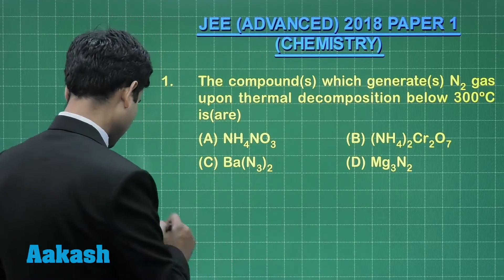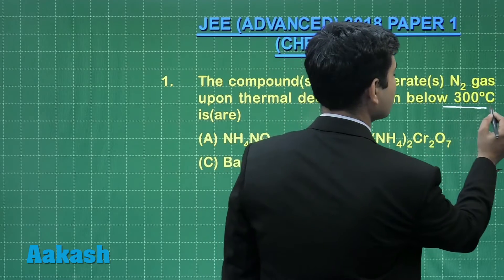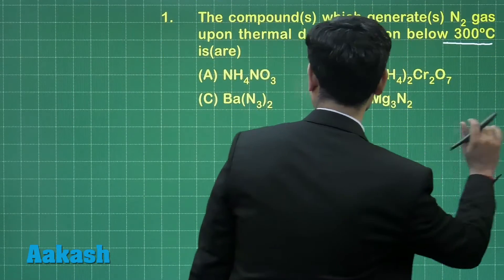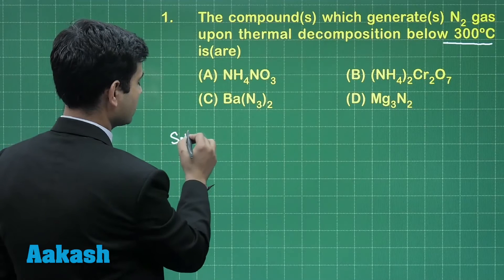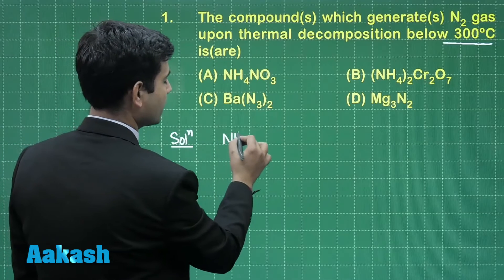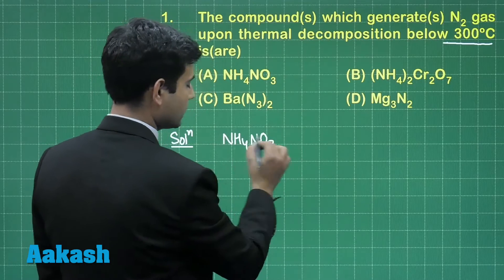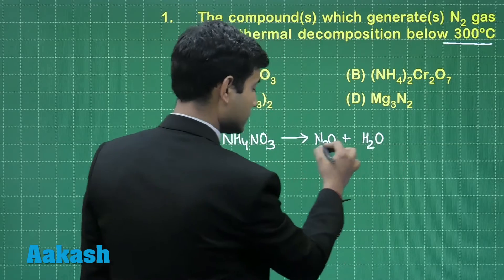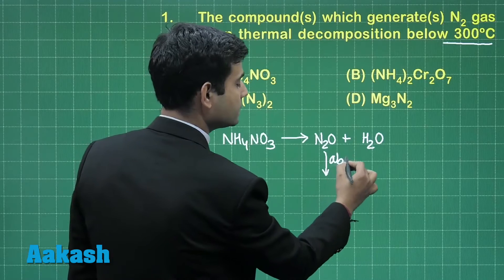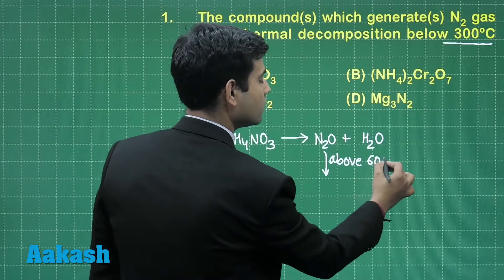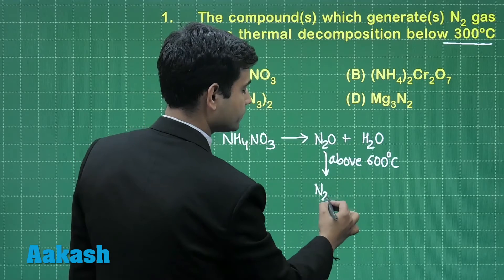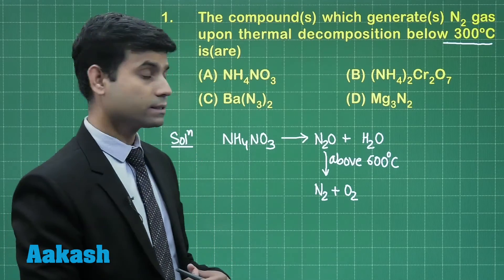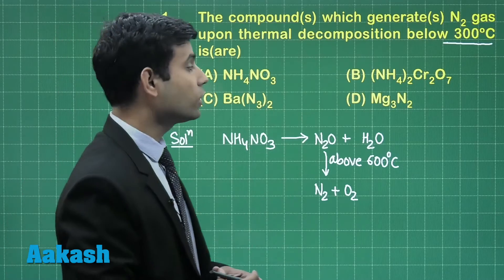Here the important point is the decomposition should take place below 300 degree Celsius. If I talk about ammonium nitrate, ammonium nitrate when heated below 300 degree Celsius gives us N2O and water. However, this N2O when heated above 600 degree Celsius gives us N2 plus O2. So it will give us nitrogen gas only when heated above 600 degree Celsius, so this cannot be the answer.